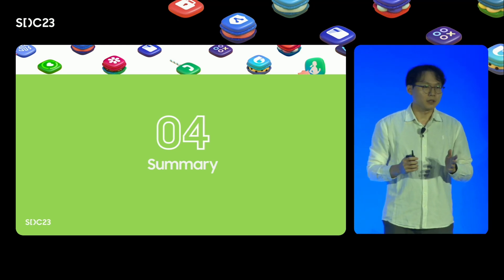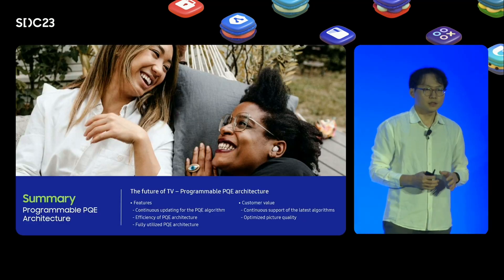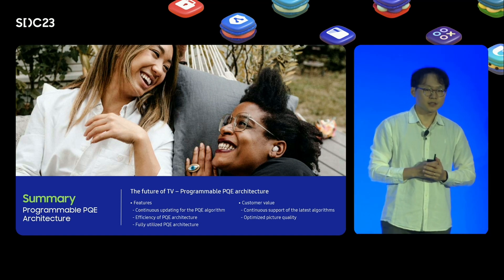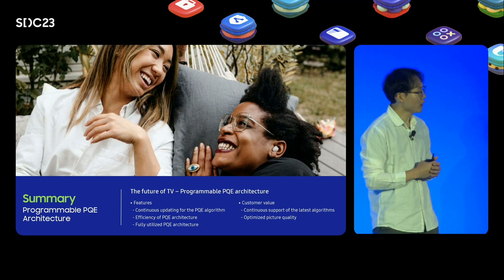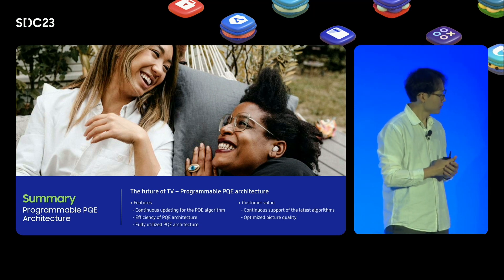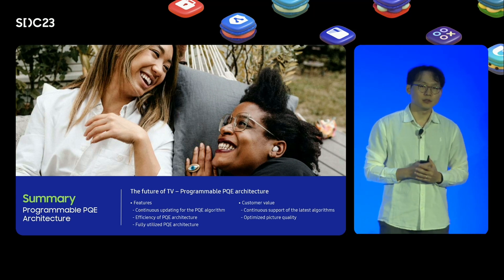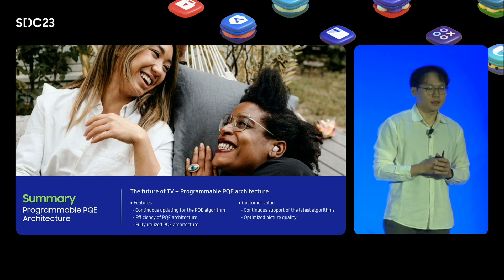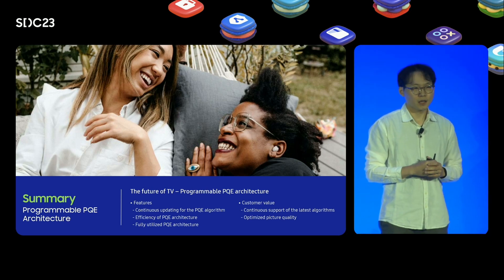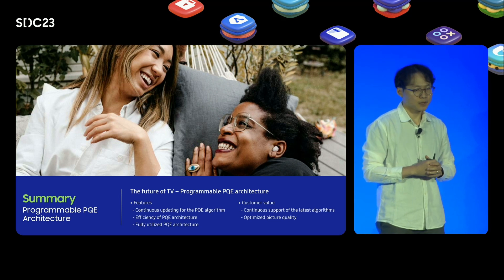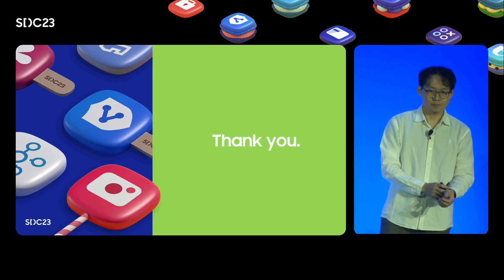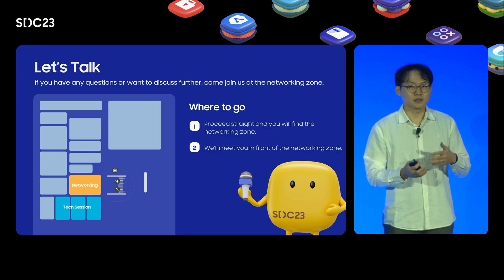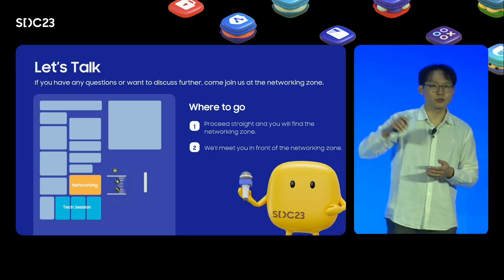I will leave off the presentation with a brief summary. In this presentation, we wanted to present the future direction of the TV PQE architecture by introducing a programmable architecture. This new architecture is highly flexible, fully utilized, and goes beyond the limits of the existing fixed architecture. It will lead to customer value — the latest algorithms can be continuously delivered to customers, and customers can get more optimized picture quality in various scenarios. Thank you for listening. If you have any questions or discussion topics, you can find me in the Networking Zone.